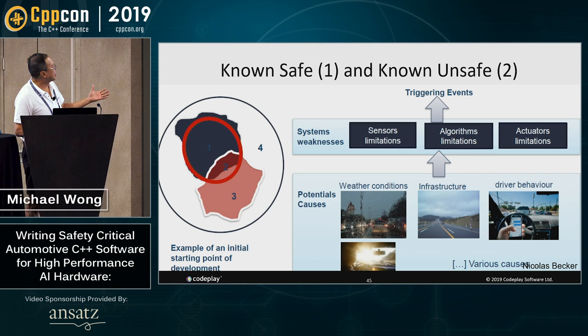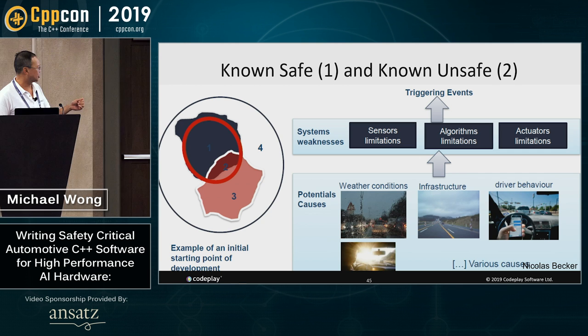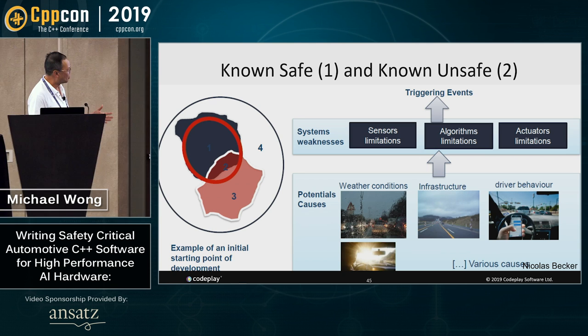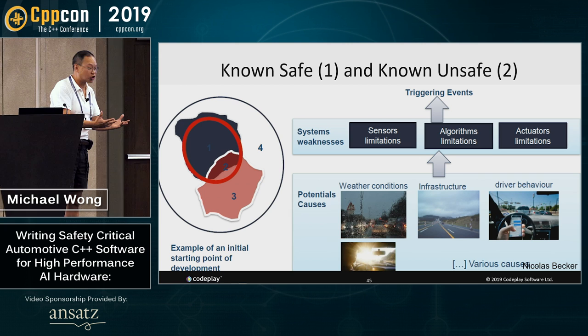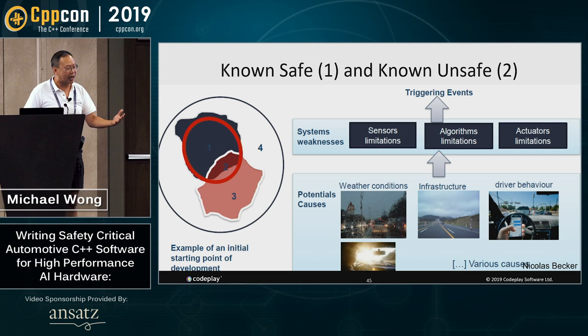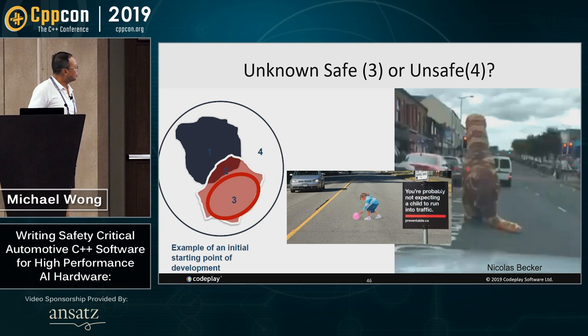If you're in the known safe and known unsafe categories, you're talking about things like weather conditions, infrastructure — in Canada, there's a lot of snow on the ground that will cover up lane markings — driver behavior, sun in your eyes. This is nothing wrong with the design; it's a failure of the intended function. This is an emerging area that we need to define well. There's a new ISO standard working in this area — I'm leading the team going through it.